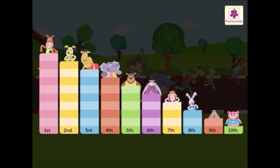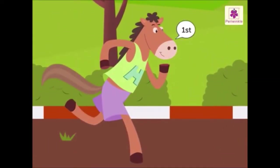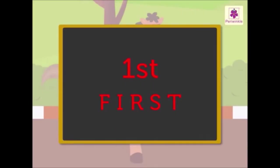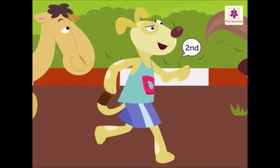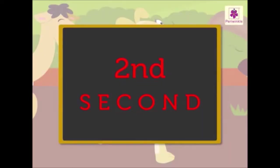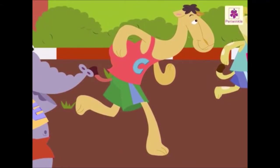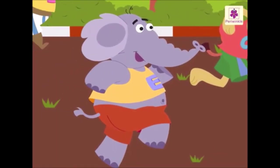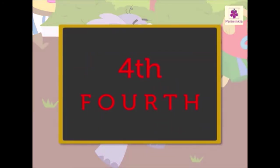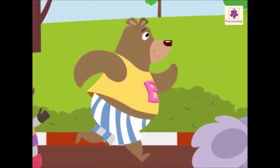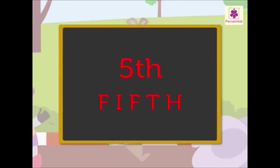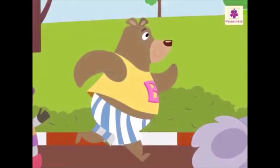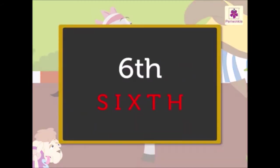Now let us look at the winning positions of these animals. The horse came first. The dog came second. The camel is at the third position. The elephant is at the fourth position. The bear came fifth. The cow came sixth.